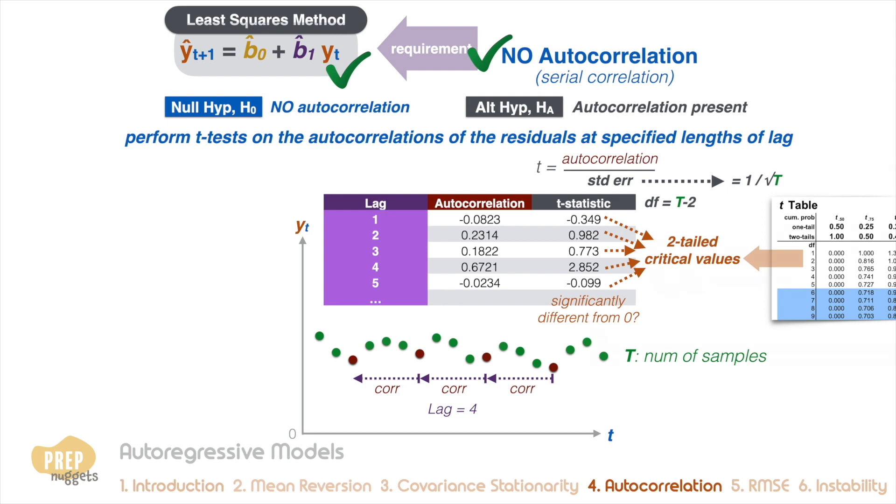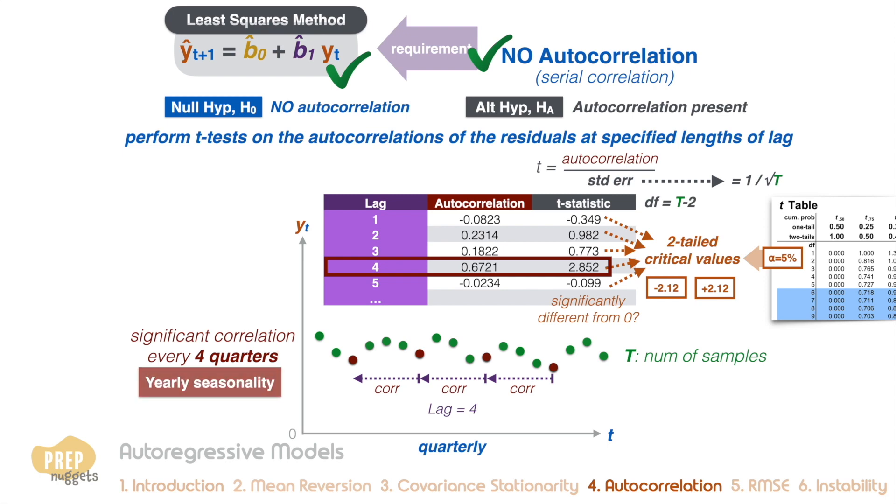If any of them is significantly different from zero, there is significant serial correlation in the model. For example, if the critical values at 5% level of significance are minus 2.12 and 2.12, notice that the t-statistic for the four-period lag falls in the rejection region. This means that it's significantly different from zero. If the data is quarterly, it means there is significant correlation every four quarters, which is a sign of yearly seasonality in the data.